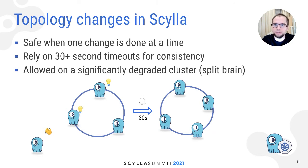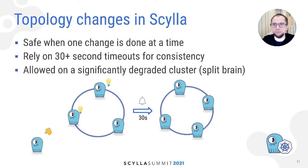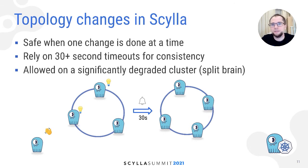Nodes that receive the information about the joining node begin forwarding reads and writes once they become aware of it. Once the joining node waits for the interval and starts receiving updates, it can begin data rebalancing. Node removal or decommission works similarly, except that the node gossiping about the node being removed is not the node being removed — because the node being removed is basically dead. So this is very similar to real life: not all of the gossip that's spread about us is spread by us.